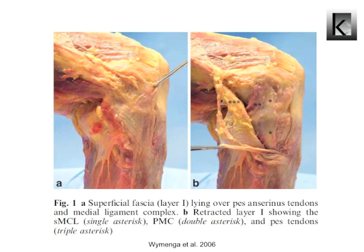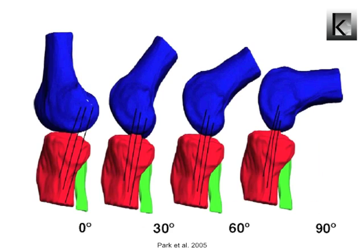Examination in 5 degrees of flexion will test the MCL combined with the posterior capsule. Data indicates that the collateral ligaments do not elongate uniformly as the knee is flexed, with different bundles becoming taut and slack. The MCL can be divided into three equal portions: an anterior bundle, a middle bundle, and a posterior bundle.